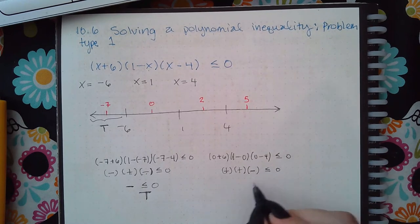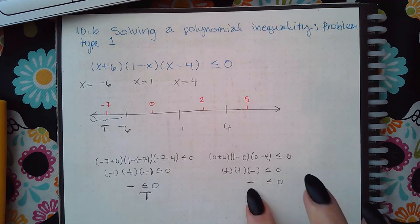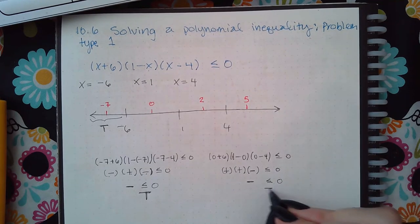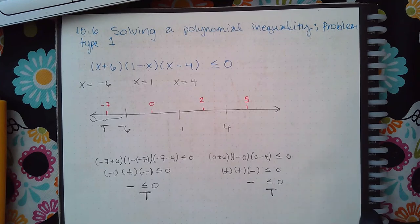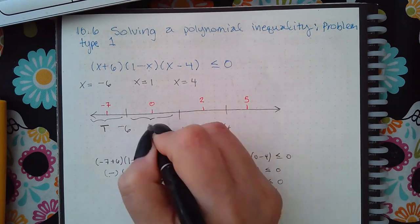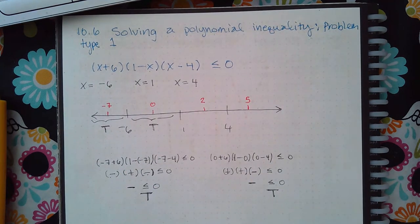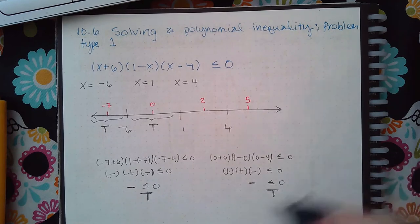So when I multiply these with a negative there, are negatives less than or equal to 0? Yes, so this is true again. So in this interval we get true.